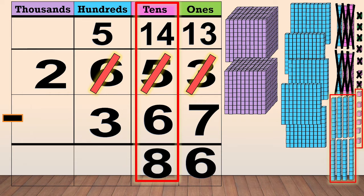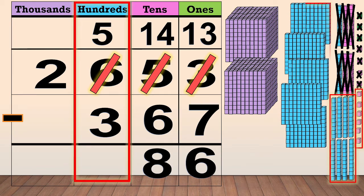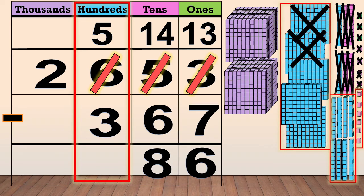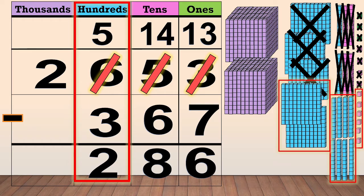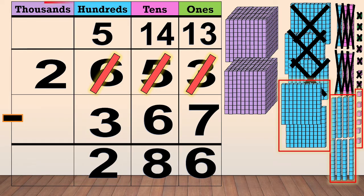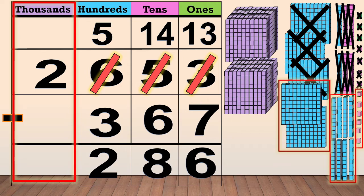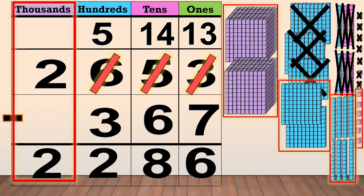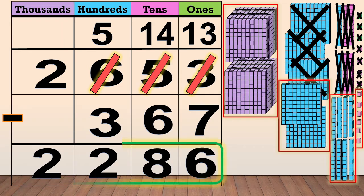Now, we subtract the hundreds: 5 minus 3 equals 2. Now, we subtract the thousands — we have 2 thousands, but there is no number in the thousands column of the subtrahend. That means there is nothing to subtract, so we bring down the 2 thousands. Our final answer is 2,286.